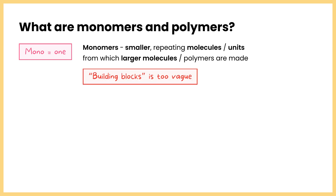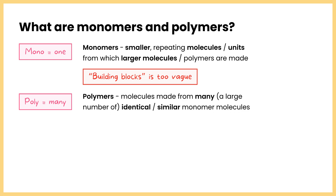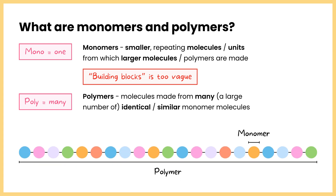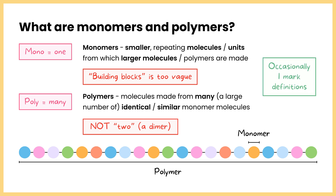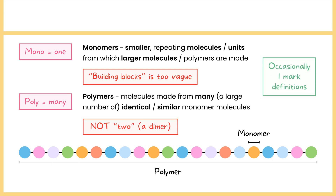Some books will describe these as building blocks, which isn't wrong, but it will be too vague to get you the mark in the exam. Poly means many, and so polymers are molecules made from many or a large number of identical or similar monomer molecules. Make sure you get across this idea of them being made from many molecules, because something made from just two monomers would actually be a dimer and so not a polymer. These occasionally come up as one-mark definitions, but most importantly you just need to be able to use these terms.